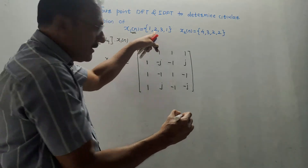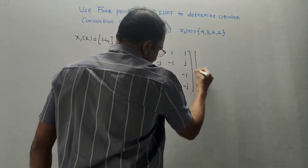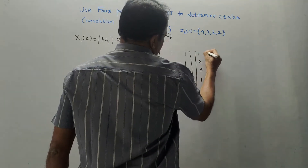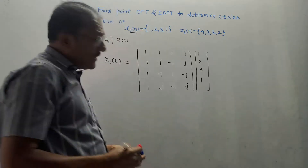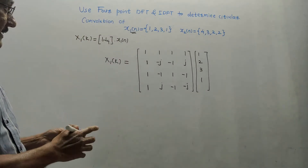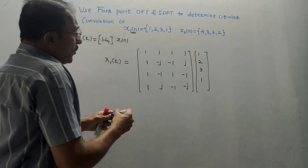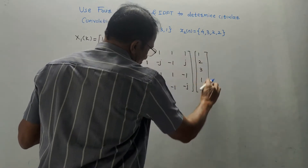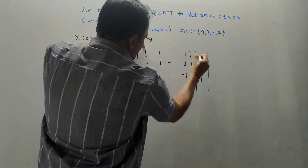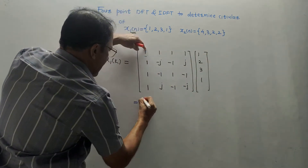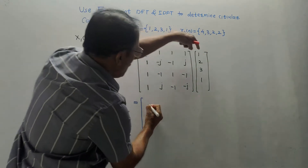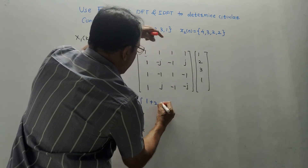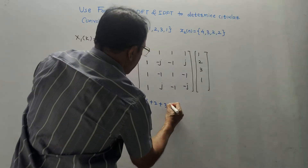Write X1(N) as a column matrix: 1, 2, 3, 1. For the first row of the matrix multiplication, consider the first row and this column: 1×1 + 1×2 + 1×3 + 1×1, giving 1 + 2 + 3 + 1.